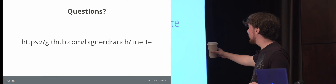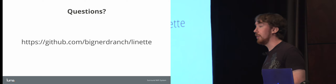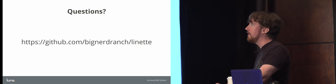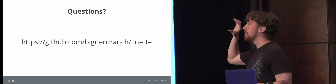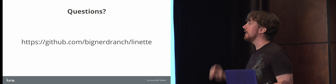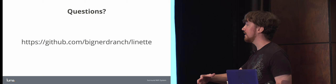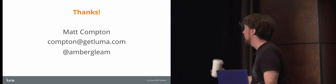All my source code is up on GitHub at github.com/BigNerdRanch/Linnette — 'Linnette' being the French word for Lint. Are there any questions? One question: can you ignore per package? Yes — that would be using the lint.xml at the top of your project. You can specify which files it should care about. Look at the documentation — it does a good job on how to suppress and ignore Lint checks, though not such a good job on how to create them. Well, thank you very much. I'm Matt Compton; you can reach me at compton@getluma.com or on Twitter at @AmberGleam.